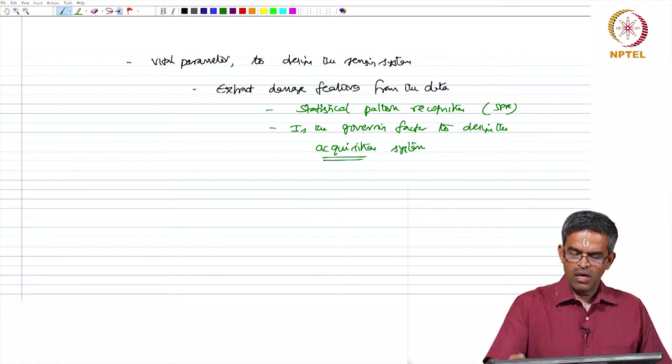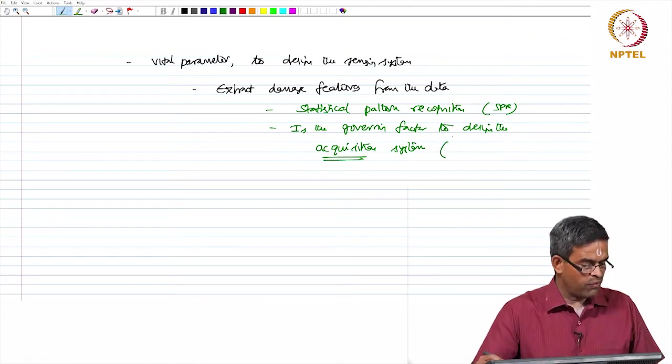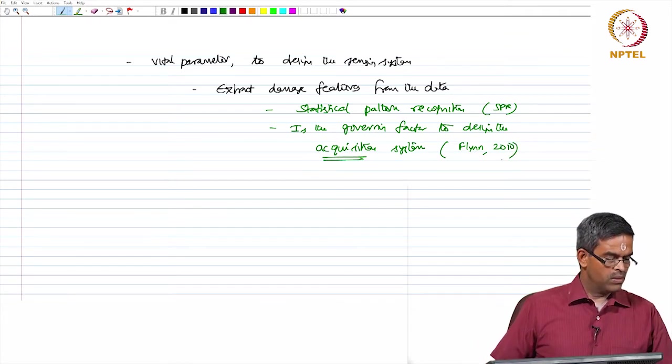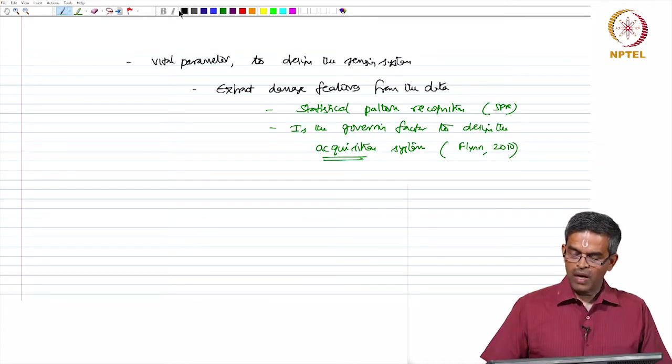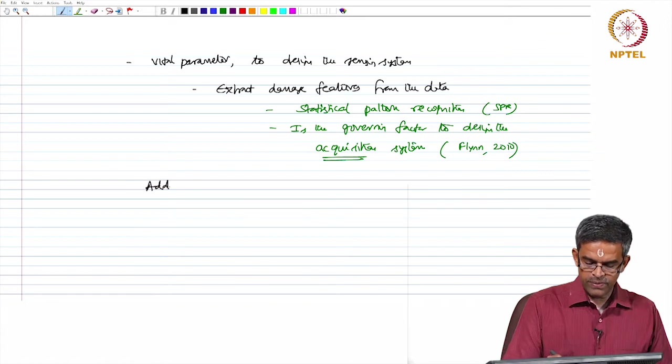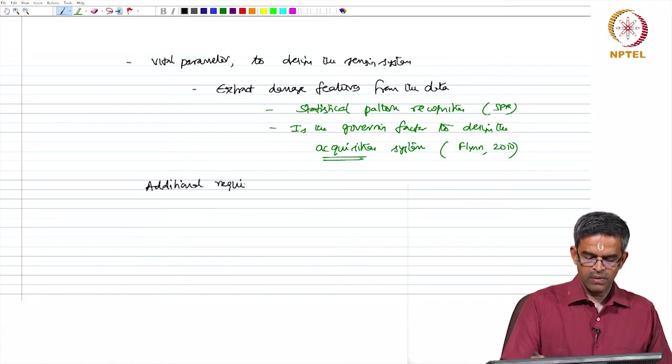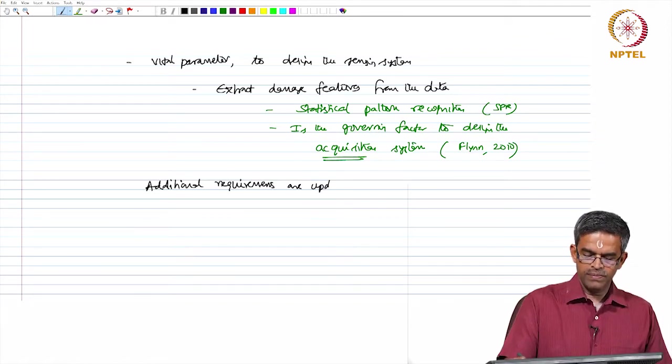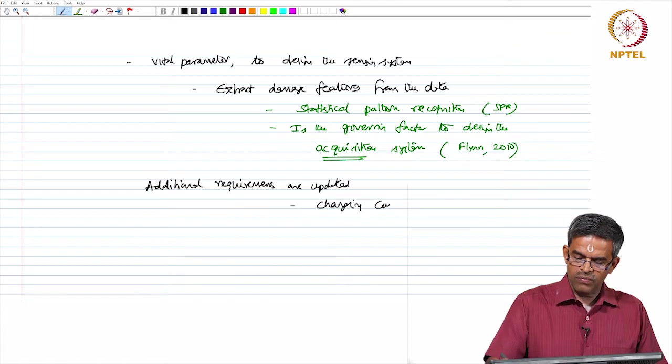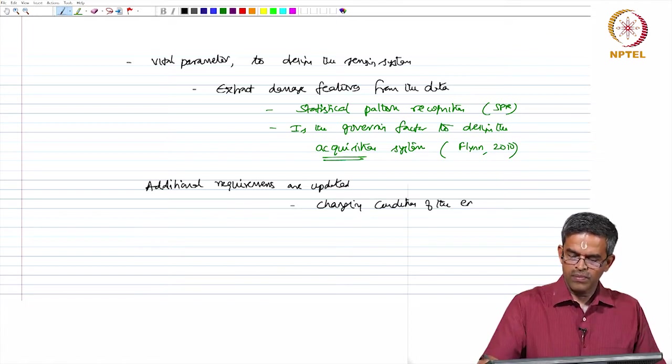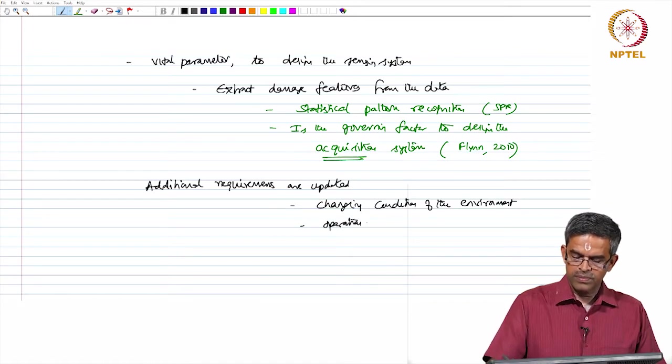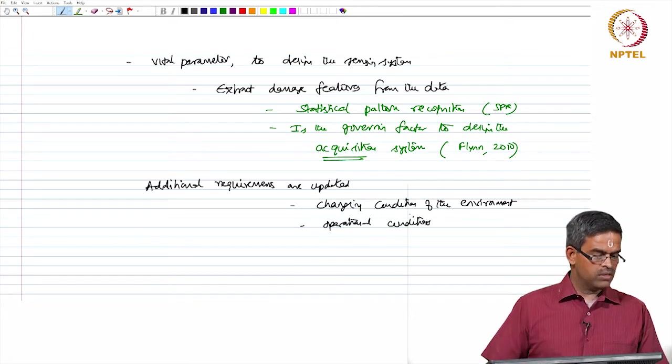We have been discussing about the sensing system. Now we have moved to the discussion on acquisition system, which is also verified by Flynn in 2010. Based upon the outcome of the standard statistical pattern recognition, additional requirements are updated based on the changing conditions of the environment and operational conditions, which also change from every phase to another phase.